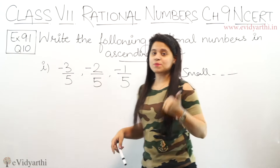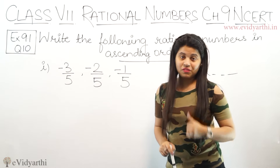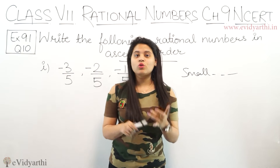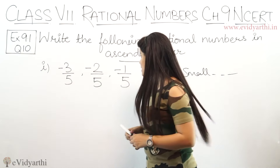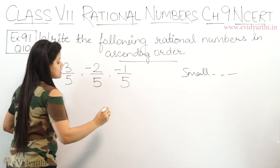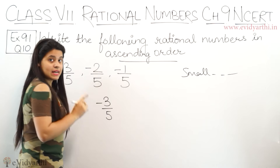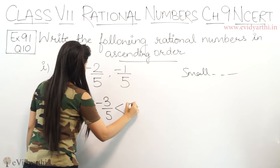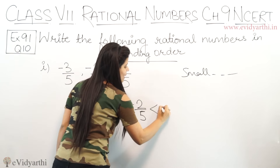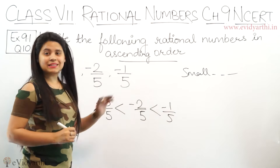तो सबसे छोटा 1, फिर 2, फिर 3. लेकिन यह numbers negative हैं. Negative numbers में same चीज होती है — जो number जितना छोटा होता है, उतना बड़ा होता है. So this means के यहां पे जो smallest number होगा वो होगा minus 3. That means minus 3 upon 5 सबसे छोटा है, and then minus 2 upon 5 उससे बड़ा है, and minus 1 upon 5 is the greatest number among these.